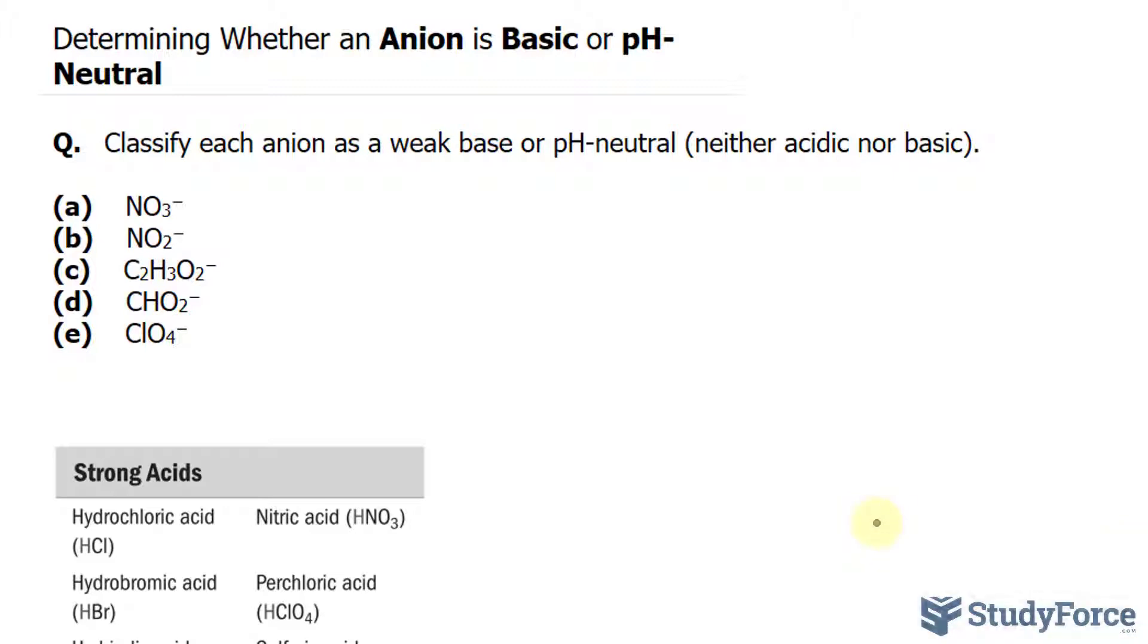However, if the anion is coming from a weak acid, when that weak acid dissociates, it dissociates incompletely, forming the anion as a conjugate base. And as a result, the conjugate base is referred to as the weak base.